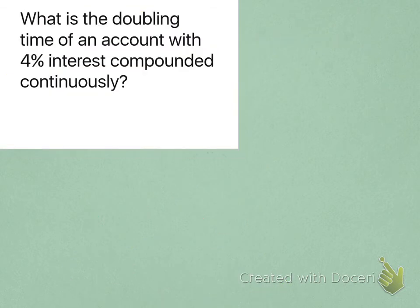Alright, it's getting tougher now. What is the doubling time of an account with 4% interest compounded continuously? The easy part is usually figuring out which formula you need to use. You see, compounded continuously, it's the PERT one. That's where we're at right now.